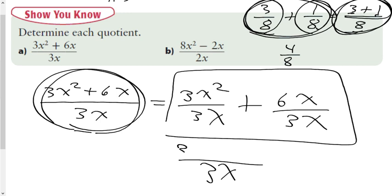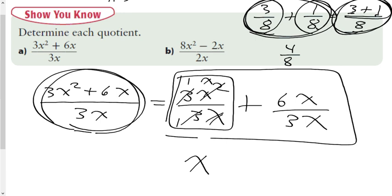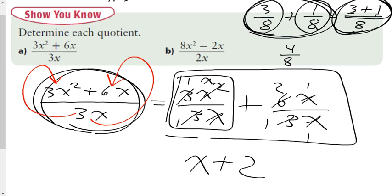Since the denominator is the same we keep it and add numerators — just like fractions. Now we can reduce each part: 3x² divided by 3x — coefficients 3 over 3 become 1, x² over x becomes x — so that's just x. And 6x divided by 3x — 6 divided by 3 is 2, x divided by x cancels — so that's just 2. We end up with x + 2. Each term in the binomial must be divided by the monomial using the distributive property of division.